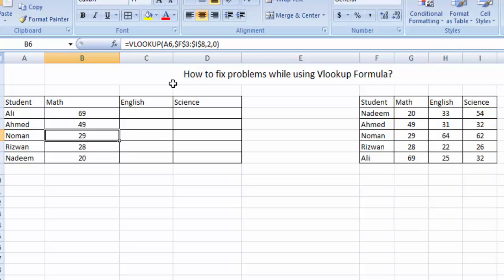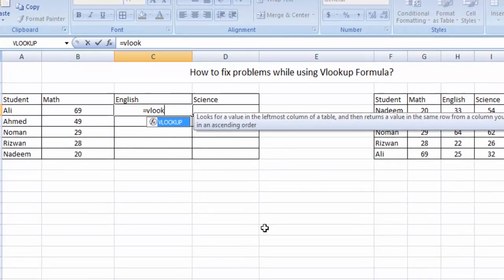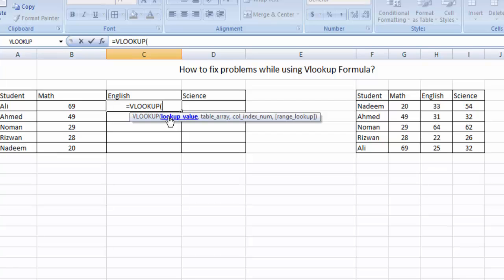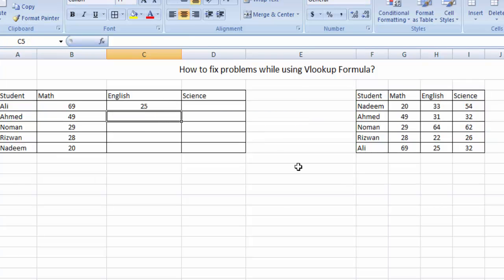So let's practice this a second time. Let me again type the formula equal to VLOOKUP. The student name, comma, the range, comma, the column number is the third column, comma, zero, bracket close and enter.